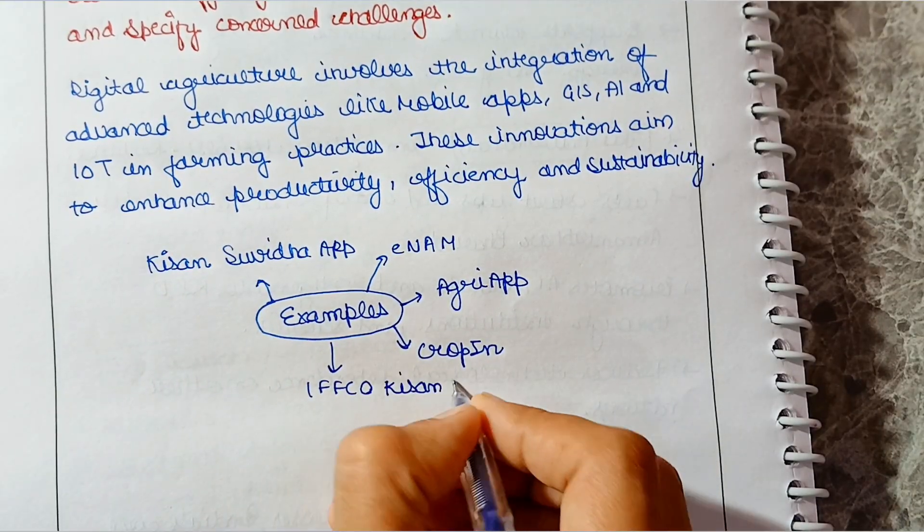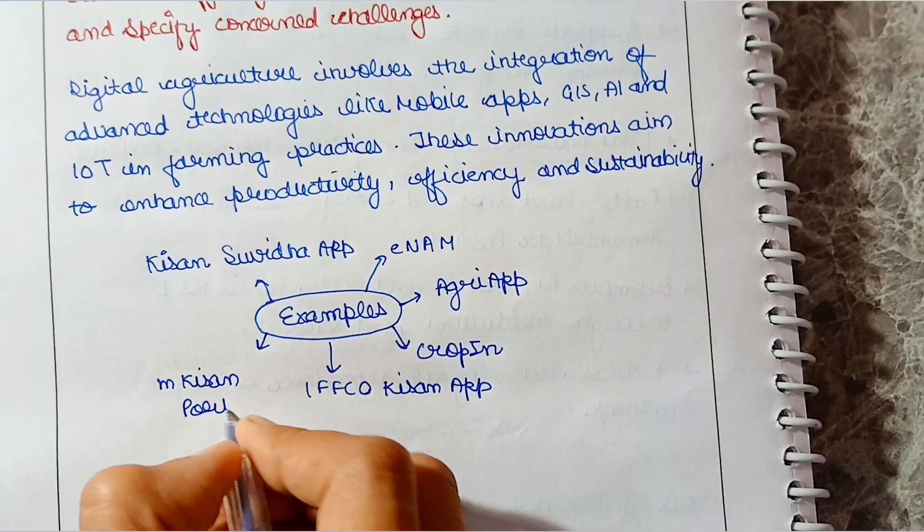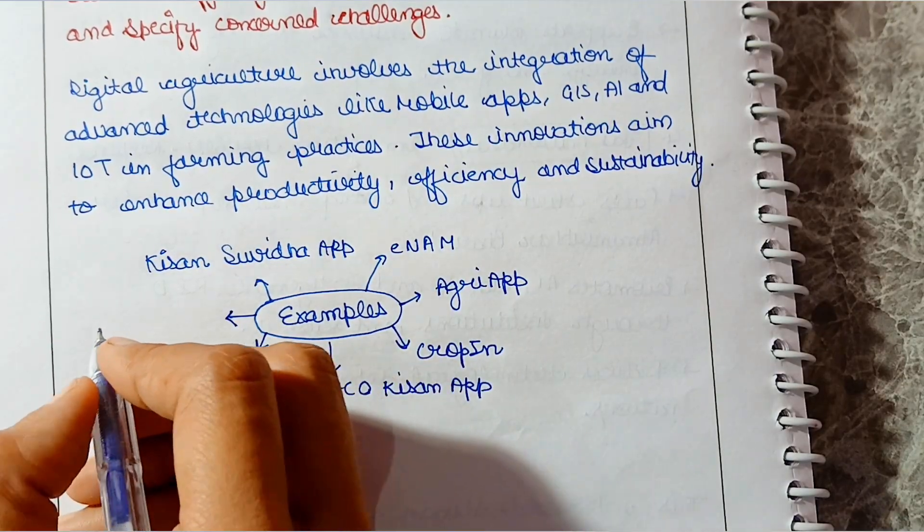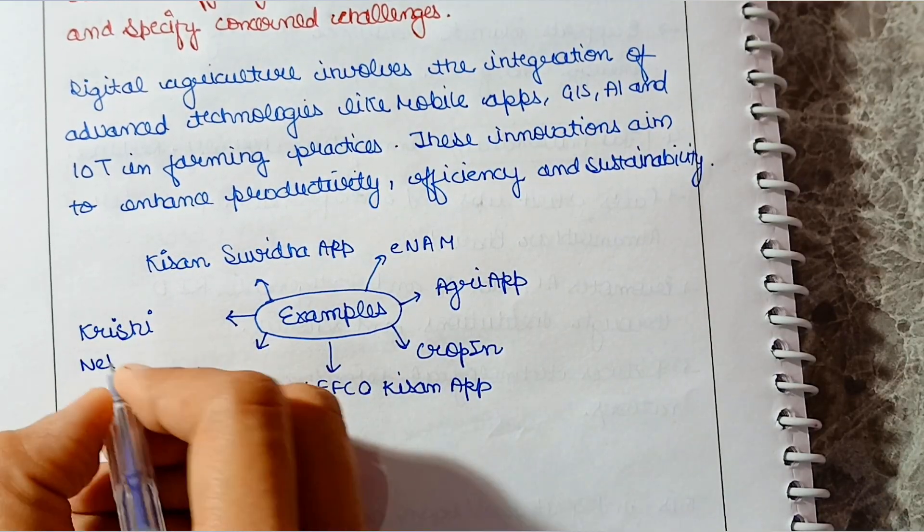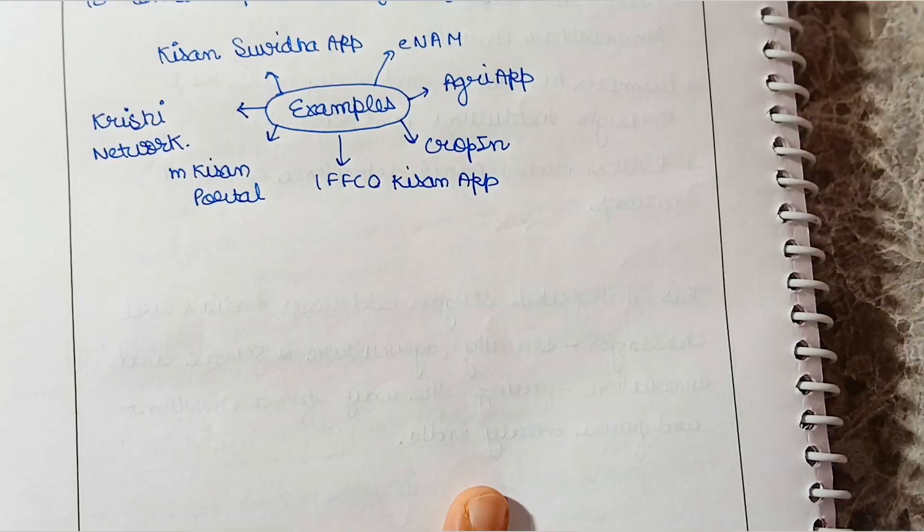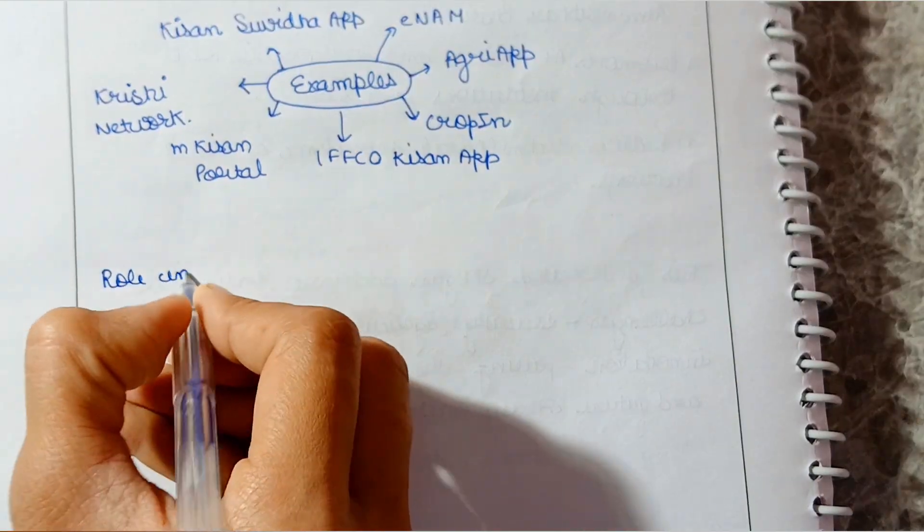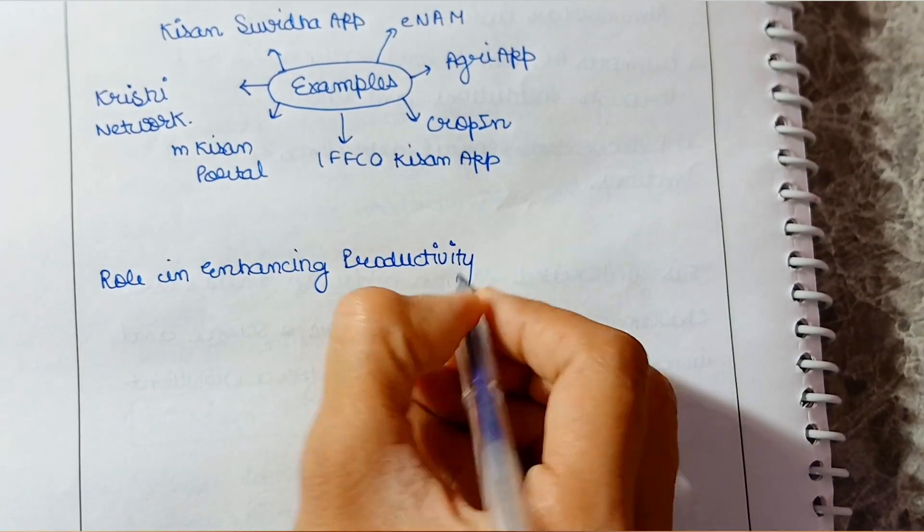We will give examples of these, such as E-NAM, Agri App, Crop-in, Ifco Kisan App, Kisan Suvidha App, Krishi Network, M-Kisan Portal. Now, let's talk about the role in enhancing productivity.